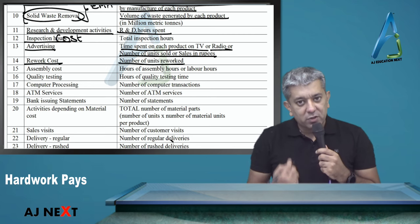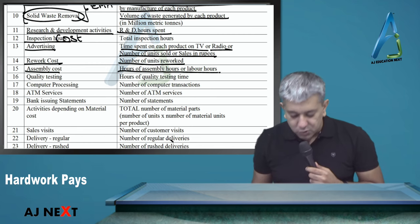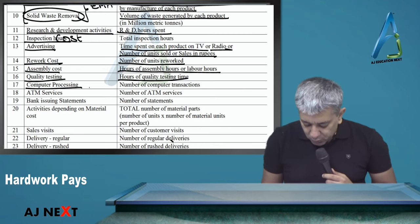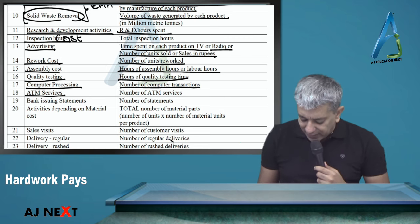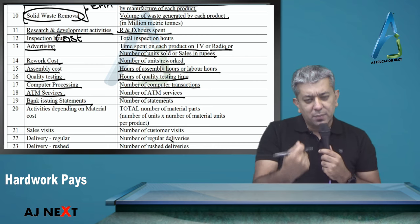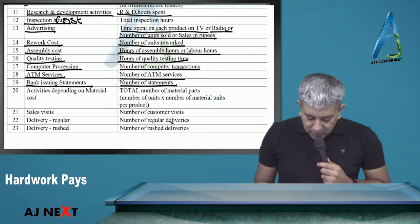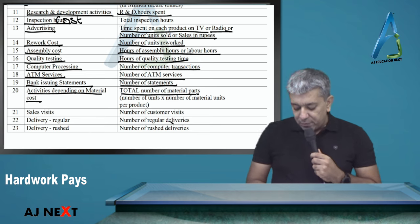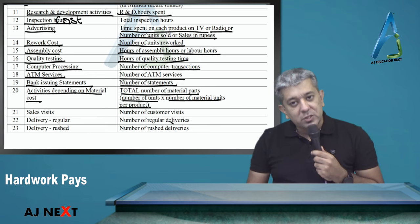EMA says no, you take it separately and divide it separately. Solid waste removal - divide in the ratio of volume of waste generated by each product. We plant trees later because of pollution from manufacturing. These are for EMA. Research and development activities - R&D spent. Inspection cost in the ratio of total inspection hours. Advertisement cost depends on what the advertisement is for - time spent on each product on TV or radio, number of units sold, or sales.